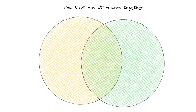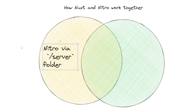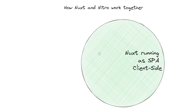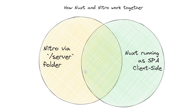Let's have a look at a little chart — maybe that explains it better. On the left side, we just have Nitro, especially the server folder. Everything you write in the server folder only runs in Nitro. Of course, if you create an API endpoint, you can call it from your Nuxt application, but the yellow part here only runs inside Nitro. Then you have the green part, which is Nuxt and Vue running as an SPA on the client side. If you don't enable any server-side rendering, you just have the SPA. But you can also disable SSR and still keep the Nitro API endpoints.